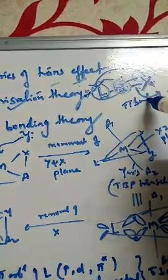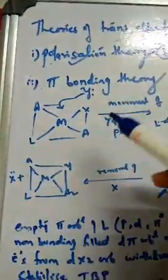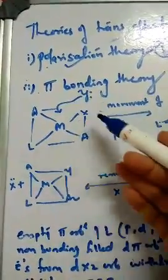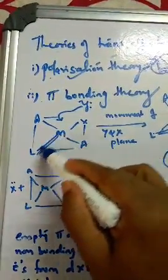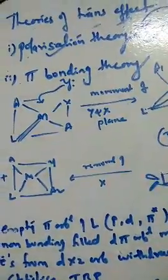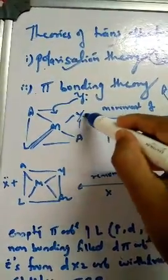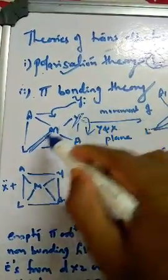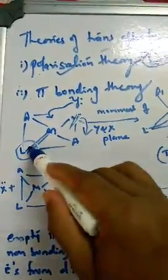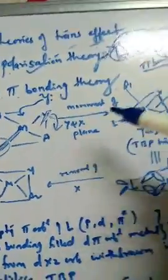That was the first theory, but it could not explain ligands that form pi bonds — the polarization theory fails for such ligands. So the next, very important theory is the pi bond theory. In square planar complexes, an incoming ligand Y attacks the metal. The ligand L in the trans position has a very good pi-bonding nature, and there is a transformation taking place.